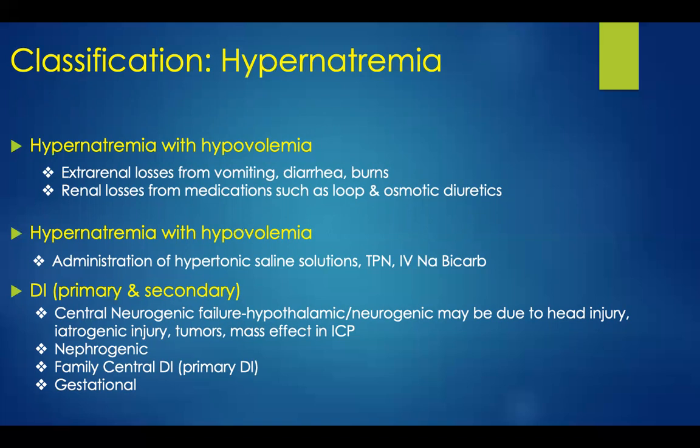There are both primary and secondary types of diabetes insipidus. Central neurogenic causes include hypothalamic damage, which may be due to head injury, iatrogenic injuries during surgery, tumors, or mass effect from increased intracranial pressure. There are nephrogenic conditions, as well as primary or familial central DI and gestational conditions that can lead to diabetes insipidus.